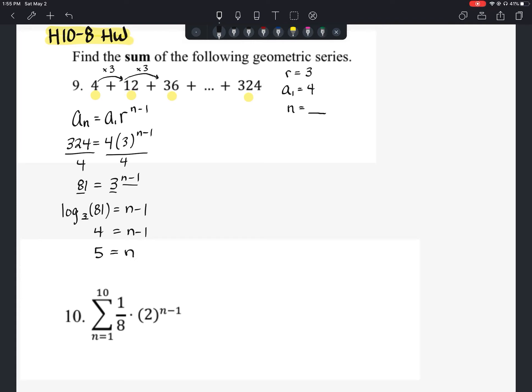So now that we know that, we can take it and we can find the sum. So remember your sum equation for a geometric series is going to be first term times r to the power of n minus the first term divided by 1 less than r.